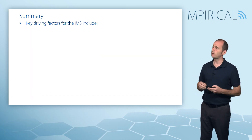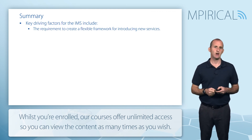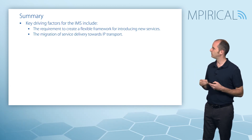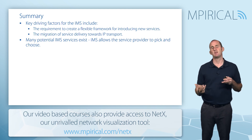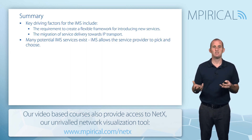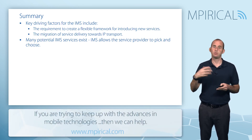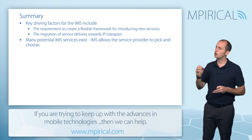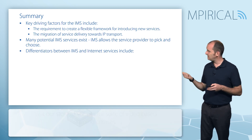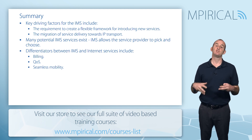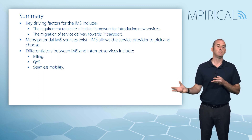In summary, we talked about some of the driving factors behind the IMS. The requirement to create a flexible framework for introducing new services was a key driver, and the migration of service delivery towards IP transport was another key driver. We discussed the fact that many potential IMS services exist, but they're not all necessarily encountered in IMS networks deployed to date. Things like VoLTE are actually primary drivers for deploying an IMS in the first instance. We also talked about differentiators between the IMS and the internet — they are very different architectures for delivering services. Key differentiators include billing, quality of service, and the notion of service mobility or seamless mobility, where we can maintain our sessions despite moving between different transport networks.